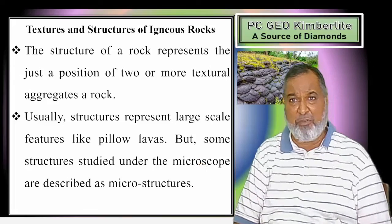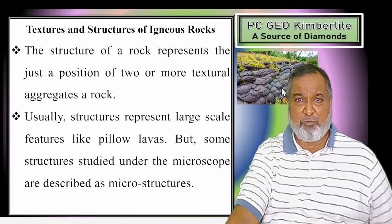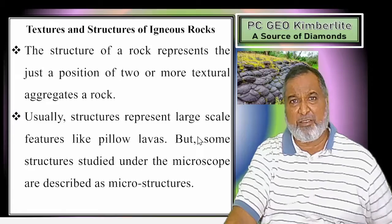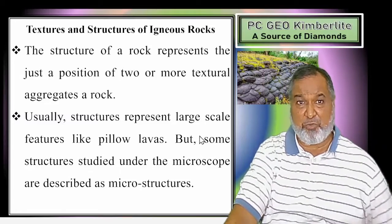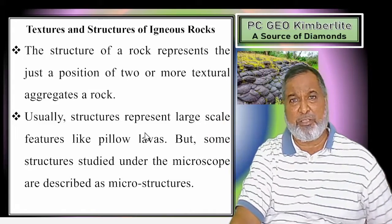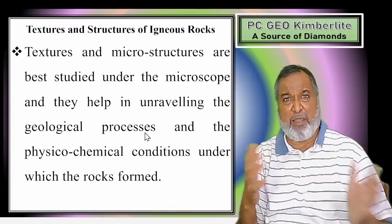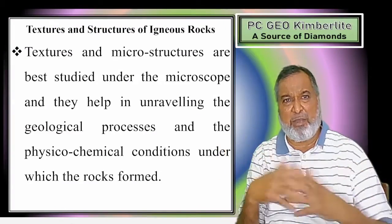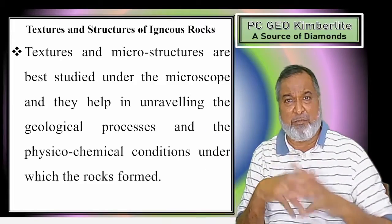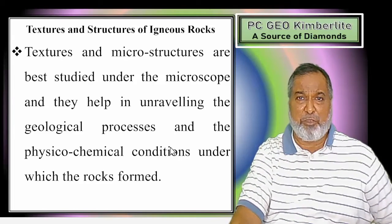Structures may be of a large scale or smaller scale - for example, pillow lavas are the large ones. Some textures and structures can be seen under the microscope - we are going to make another video for that. But today we are going to see only the megascopic ones. Microtextures and microstructures will be studied with microscopical study, but not today. Whatever we study today is the megascopic textures and structures, which give you the highlight of the physicochemical conditions under which that particular rock was formed.